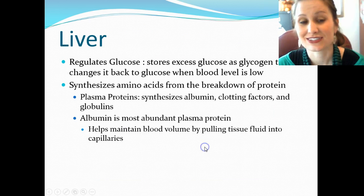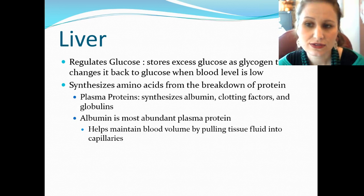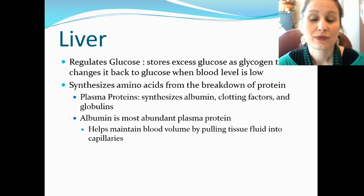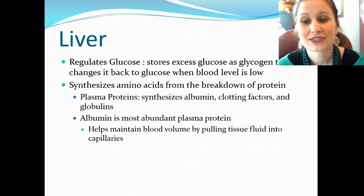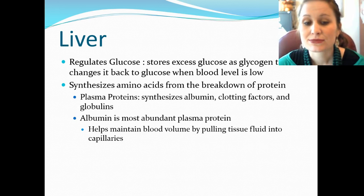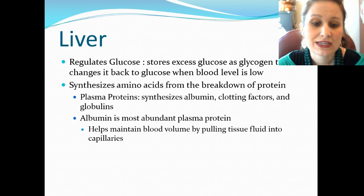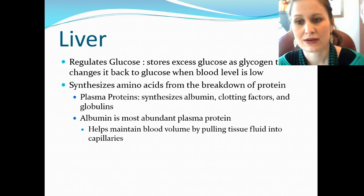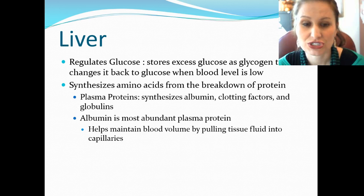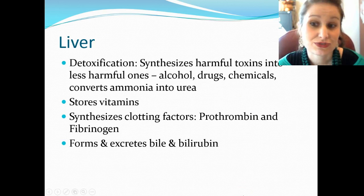The liver performs many functions. First, it regulates glucose and stores excess glucose as glycogen. When blood sugar drops, it converts that glycogen back into glucose. It also synthesizes amino acids from protein breakdown, produces plasma proteins including albumin and clotting factors. Albumin is one of the most abundant plasma proteins — when we check albumin on labs we're also checking nutrition, as it helps maintain blood volume by pulling fluid back into the capillaries.